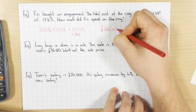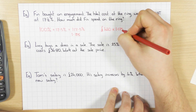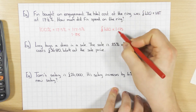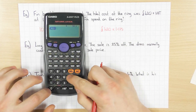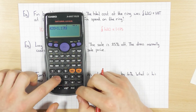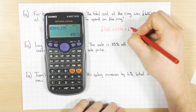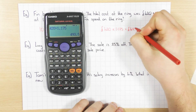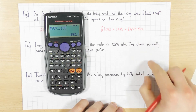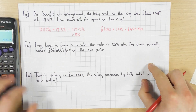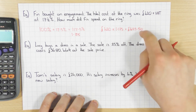100% plus 17.5% gives me 117.5%. As a decimal, divide by 100: 1.175. So let's use that multiplier — £420 times by 1.175 to increase it by 17.5%. That gives us £493.50. Remember it's money, so don't forget to put the zero on the end — you will lose a mark if you don't do that.